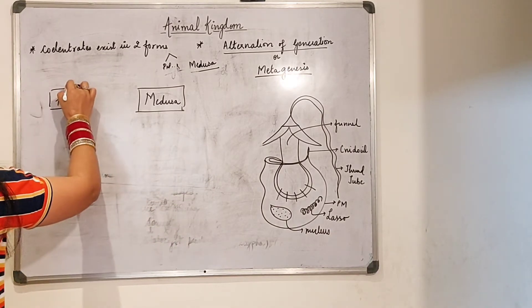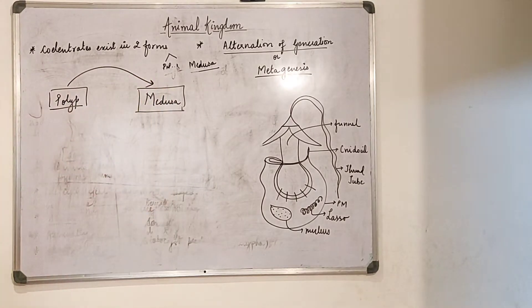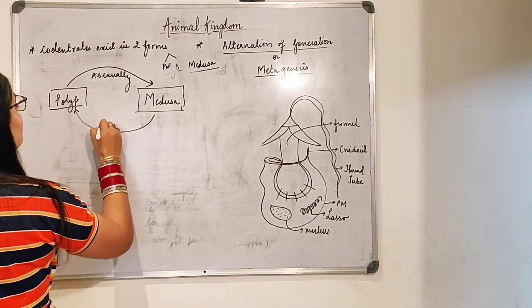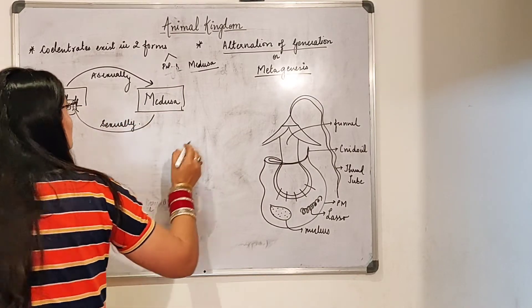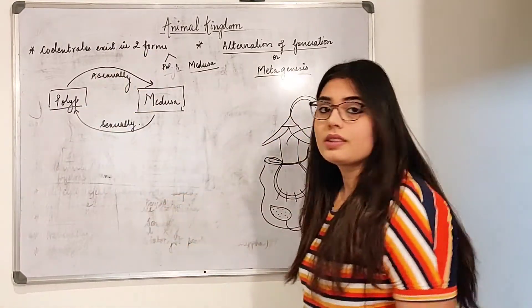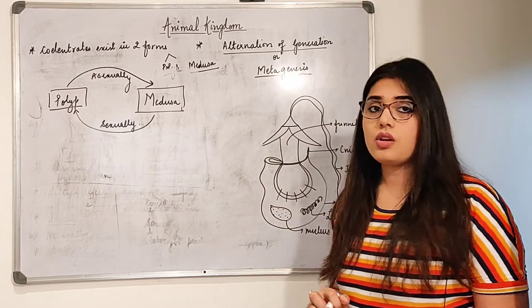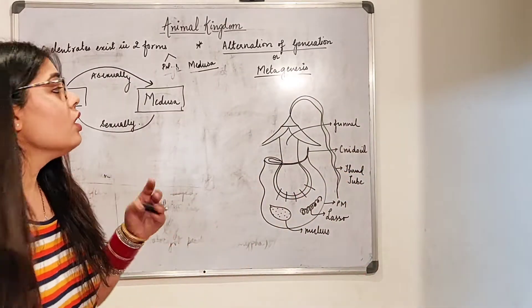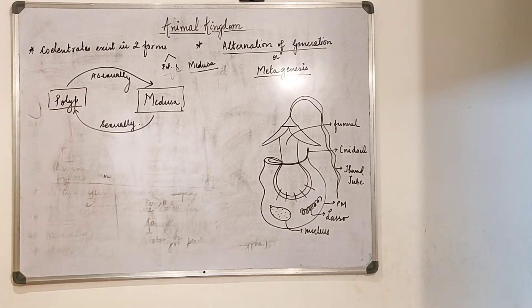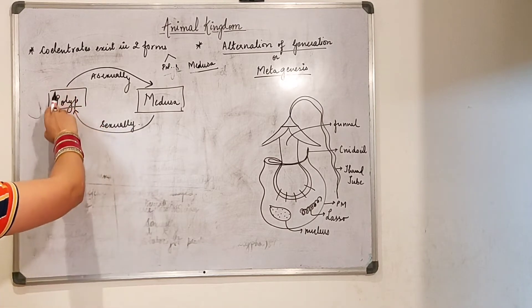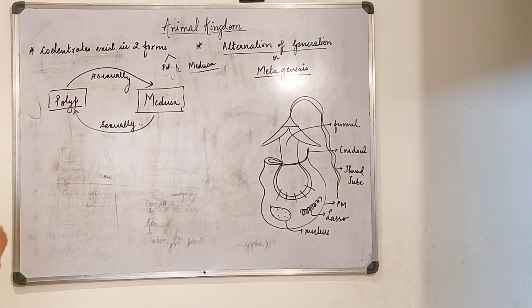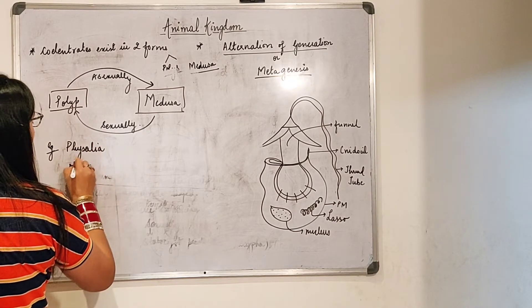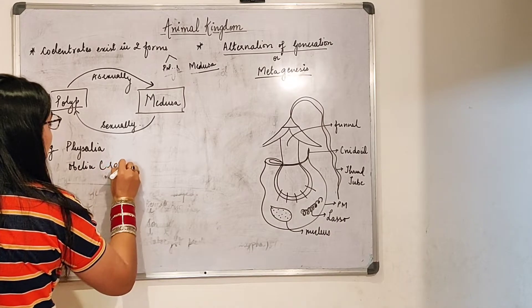When converting from polyp to medusa stage, the process takes place asexually, and from medusa to polyp it takes place sexually. This entire process — an organism having the ability to convert itself between polyp and medusa forms — is what we call alternation of generation or metagenesis. Examples include Physalia and Obelia, also called Portuguese man-of-war.